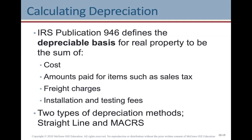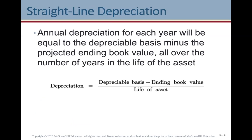There are two types of depreciation methods: straight-line and MACRS — a US term for accelerated depreciation. When you calculate depreciation at an accelerated rate, there are different ways to do it: it could be double, quadruple, or many variations. Straight-line is the easiest and most commonly used. Straight-line depreciation is annual depreciation for each year equal to the depreciable basis minus the projected ending book value, divided by the number of years in the life of the asset.